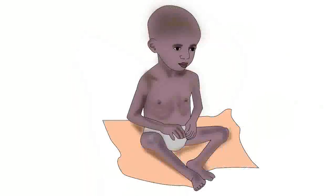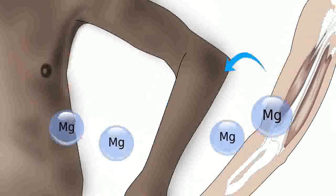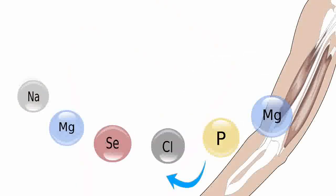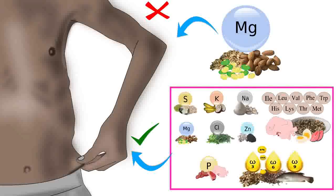When tissue breakdown becomes severe, the functions of the cells are affected. Also, there is a reduction in appetite. The tissue breakdown provides the nutrient in which the body is deficient; however, it also releases all the other type 2 nutrients from the tissues, which are then excreted from the body. So all type 2 nutrients must be provided in a type 2 nutrient deficiency.